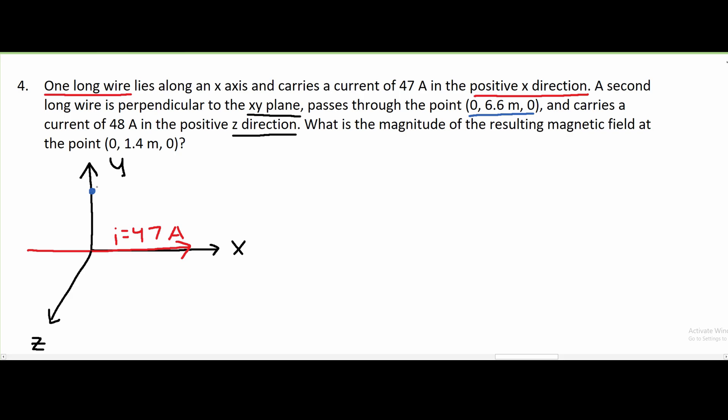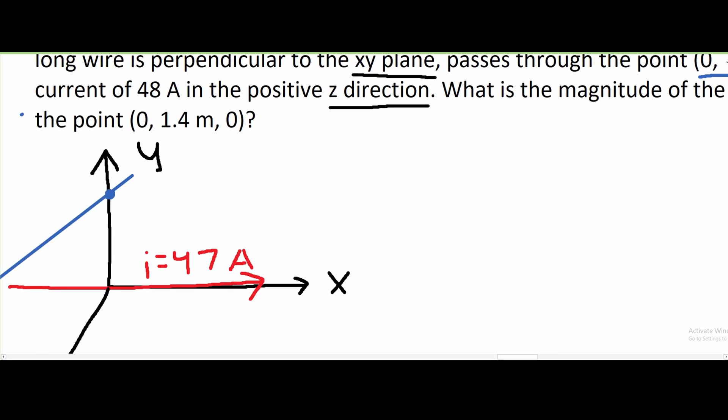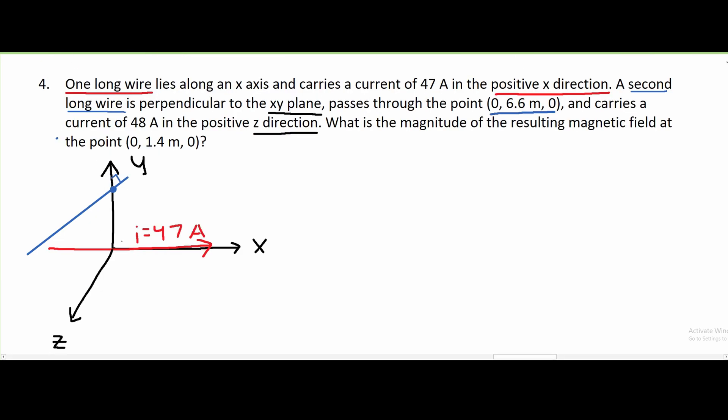We are going to have our next wire. It is perpendicular to the xy plane, meaning that if we draw it like this, it is going to form a 90 degree angle right here. Our first wire we can mark as i1, and our second is going to be i2, and our i2 carries the current of 48 amps.